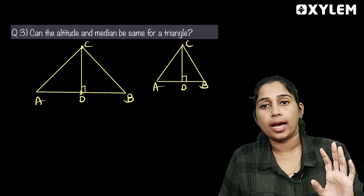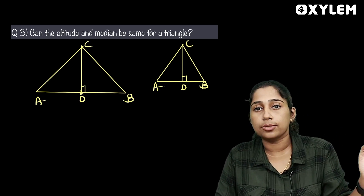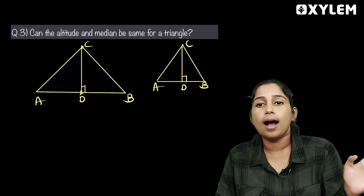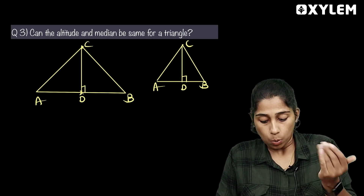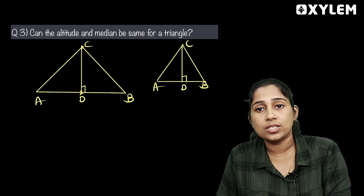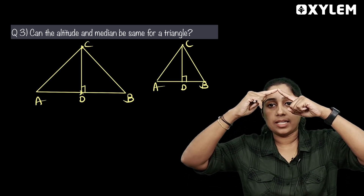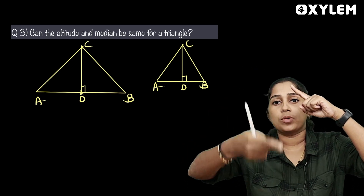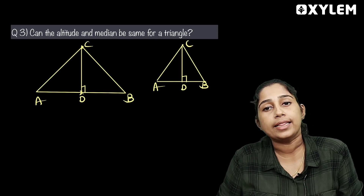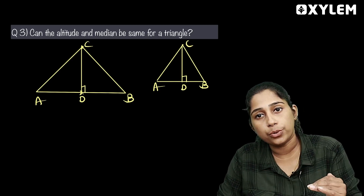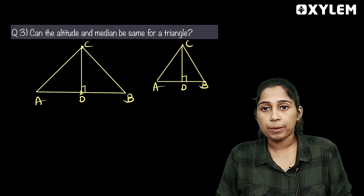For an equilateral triangle, all altitudes and all medians are equal. Whereas for an isosceles triangle, the two equal sides meet the opposite side — that altitude and median coincide.